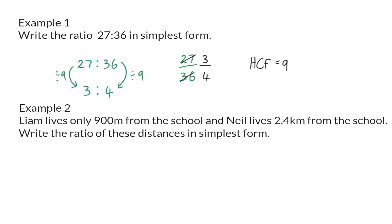Example 2. Liam lives only 900 meters from the school, and Neil lives 2.4 kilometers from the school. Write the ratio of these distances in simplest form.